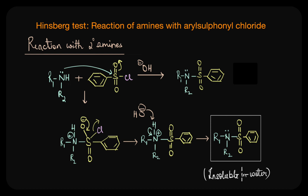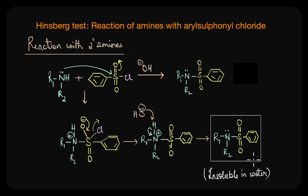This product from secondary amines will be insoluble in water, because there is no acidic N–H bond and no acidic proton attached to the nitrogen atom. No matter how much excess alkali you add, there is nothing to get deprotonated. Since there is no acidic N–H bond, it does not react with alkali and we don't get a soluble salt. So the reaction with secondary amines gives an insoluble sulfonamide, which is the characteristic difference: primary amines give a soluble salt, secondary amines give an insoluble sulfonamide.